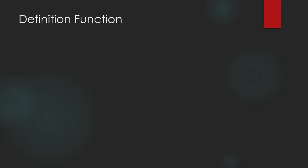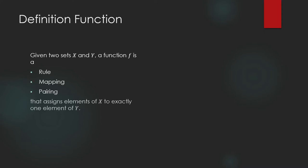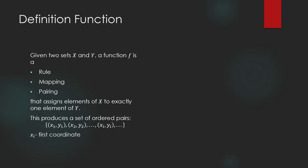Let us go back to our definition of a function. Given two sets x and y, we can look at a function f as a rule, a mapping, or a pairing that assigns elements of x to exactly one element of y. This produces a set of ordered pairs, and we call the x-coordinates as the first coordinates and the y-coordinates as the second coordinate.